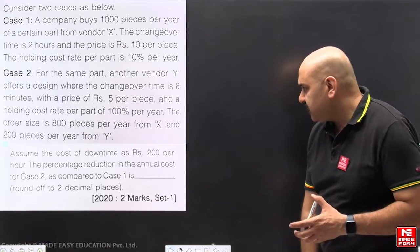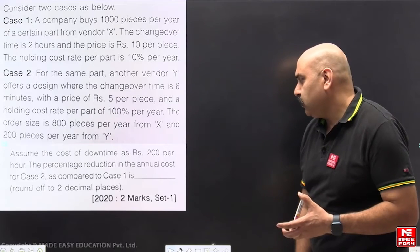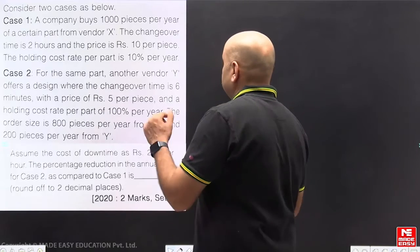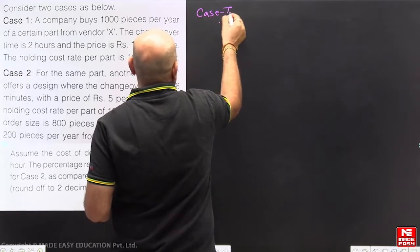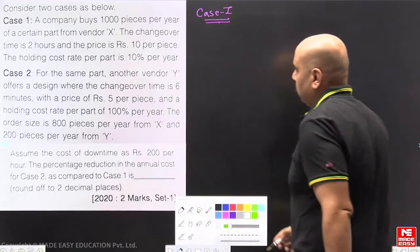The percentage reduction in the annual cost for Case 2 as compared to Case 1, rounded off to 2 decimal places. Percentage reduction we need to find out. Now see, first case - Case 1 is when we are directly taking everything from vendor X only.